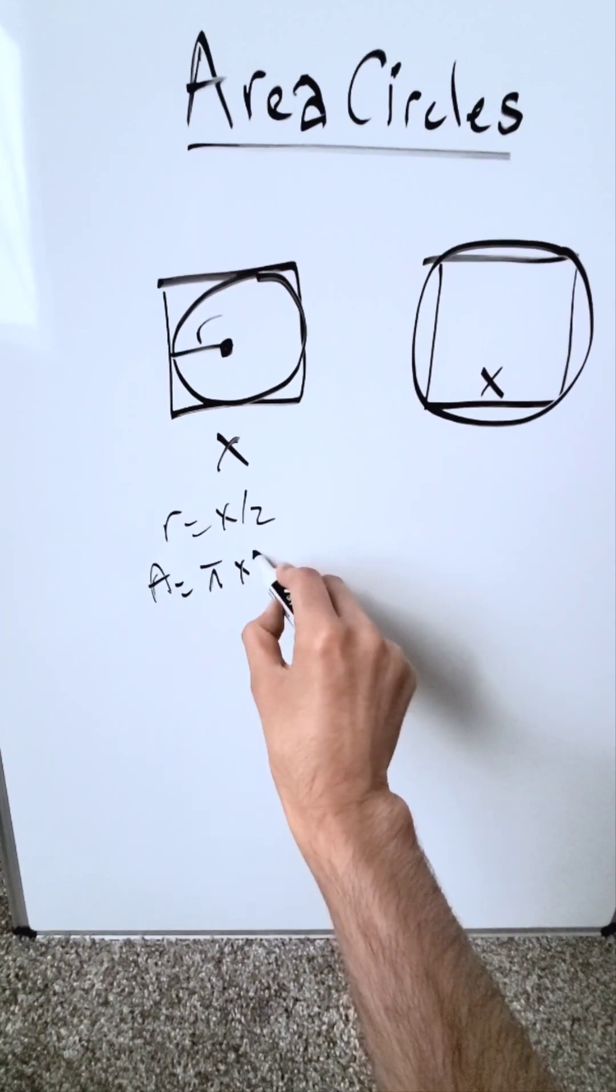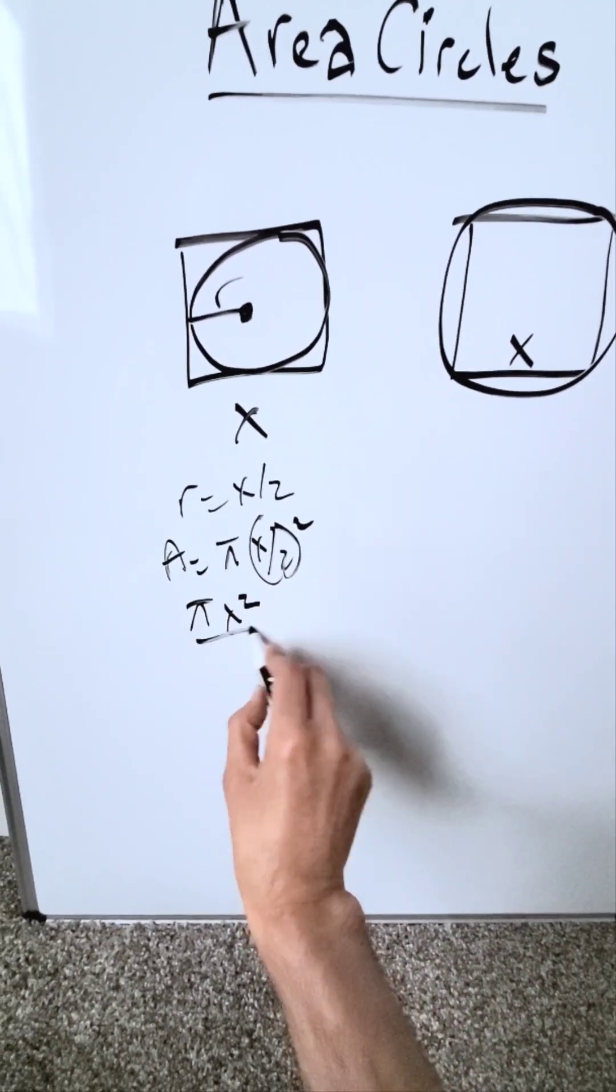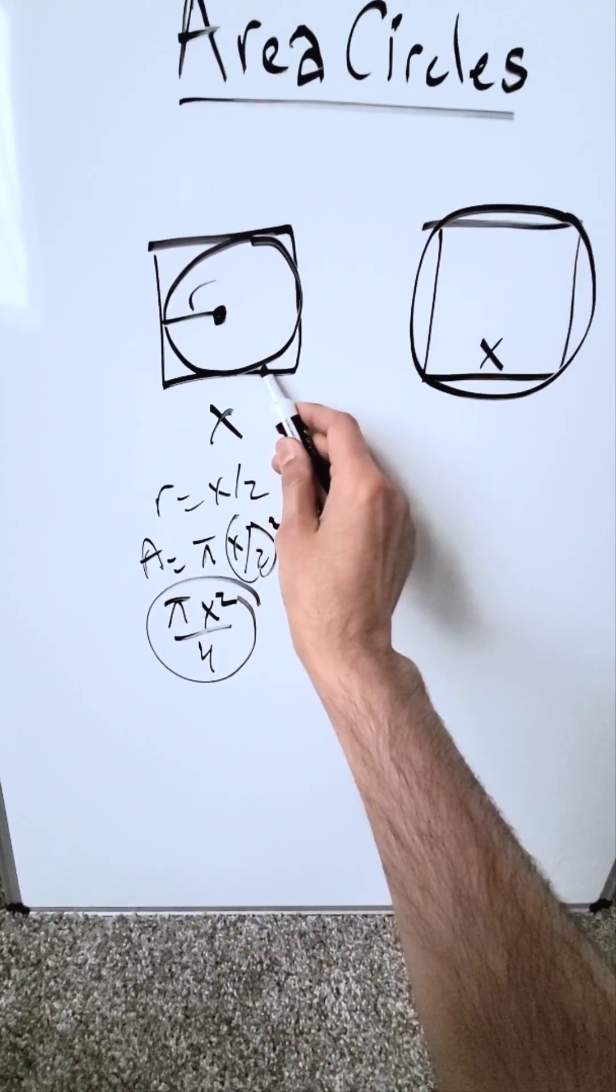The area of that circle is π(x/2)² and you know that to be πx²/4. That right there is the area of this smaller circle.